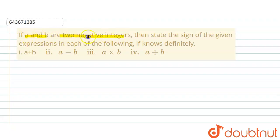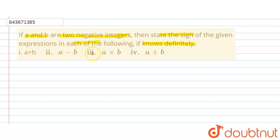Hello everyone. The question says that if a and b are two negative integers, then find the sign of the given expression in each of the following. The first part is a plus b, second is a minus b, third is a into b, and fourth is a divided by b.